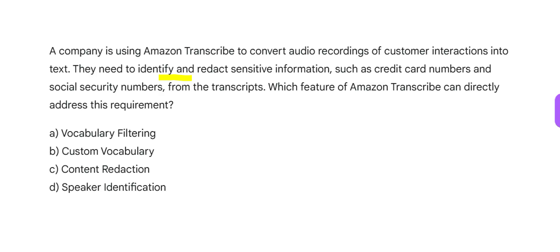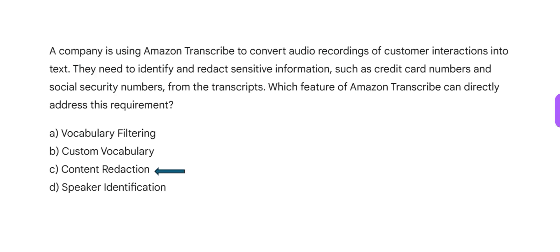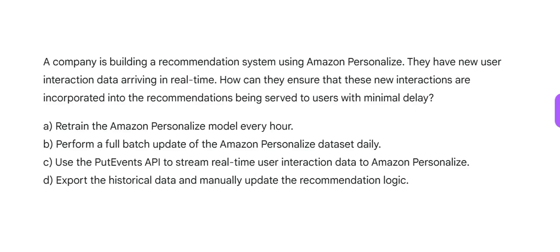Speaker identification tells you that between this timestamp and that timestamp the speaker was John, or between this minute and that minute the speaker was Martin — that is a different requirement. For redaction, I will use common sense: I see 'content redaction,' so I will go with that. Vocabulary filtering is for filtering out certain words, like bad words. Custom vocabulary is also different. So content redaction is our final answer.